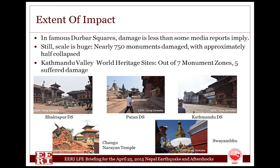Nepal, mainly Kathmandu Valley, suffered huge damage to cultural heritage. Nearly, according to the Department of Archaeology, 750 monuments from all over the country were damaged, with approximately half collapsed. Though the scale is huge, that is less than some media reports imply. Out of seven monument zones of Kathmandu Valley, five suffered different levels of damage.